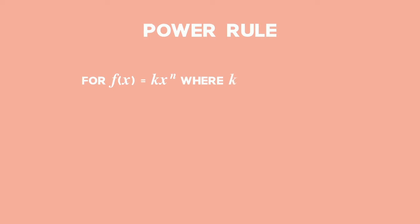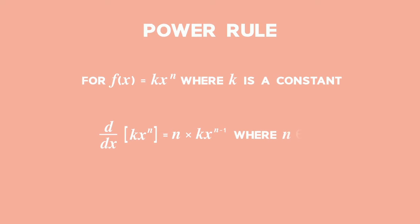The Power Rule helps you find the derivative of a variable raised to a power. For f of x equal to k times x to the power of n, where k is a constant, the derivative of k times x to the power of n with respect to x equals n multiplied by k times x to the power of n minus 1, where n is a real number.